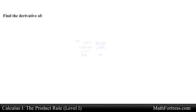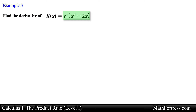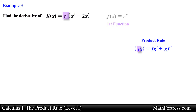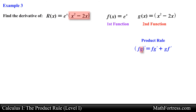Alright let's try a slightly more challenging example. Find the derivative of r equals e to the x times the quantity x squared minus 2x. Here we have a product of two functions, so let's go ahead and use the product rule. Let's assign e to the x as our f of x and assign the quantity x squared minus 2x as our g of x.